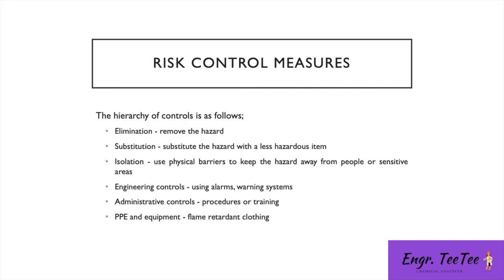For risk control measures, the hierarchy of controls starts with eliminating the hazard, then substituting it with something less hazardous, then isolating it using physical barriers — for example, a bund around an area where flammable material could pool. Next are engineering controls such as alarms and warning systems, followed by administrative controls like procedures and staff training, and finally personal protective equipment as a last resort.